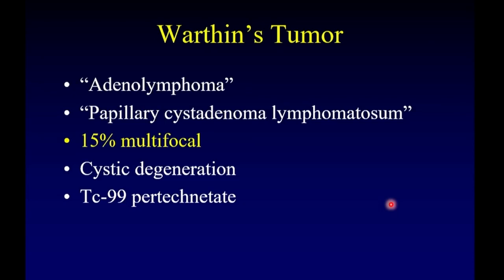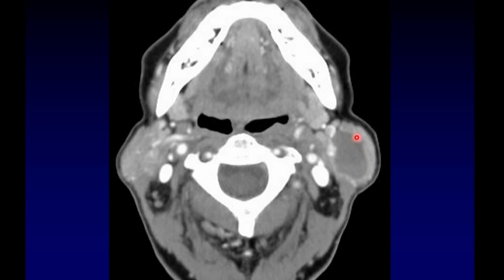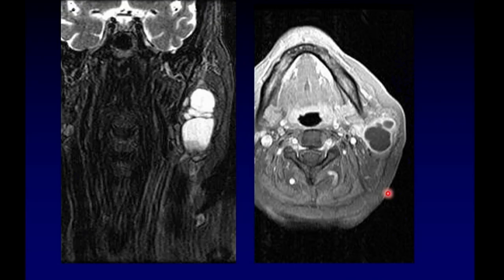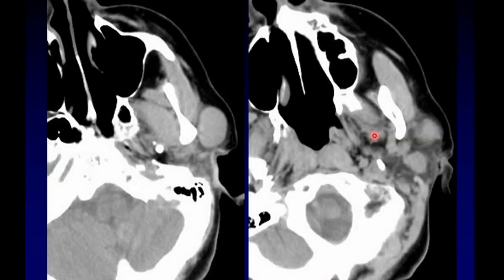Here's a characteristic appearance of a Warthin's tumor: it does not enhance and has a cystic appearance centrally, but is a very well-defined tumor. Here is an example on MRI. Because these are cystic, they have the possibility of becoming superinfected — as in this case, where you can see all the surrounding inflammation.